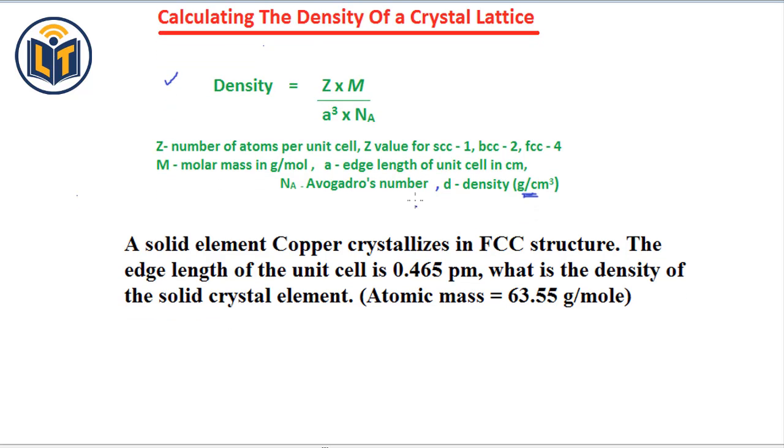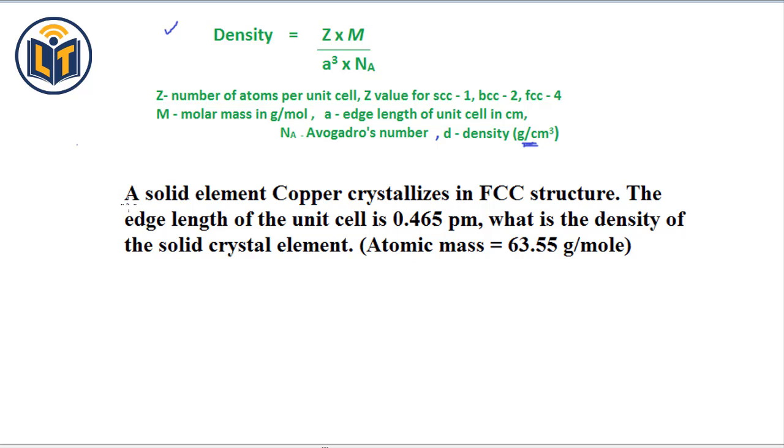This is the problem given here and I will show you how we can use this density formula to calculate the density of a crystal lattice. In this problem, it says that a solid element copper crystallizes in FCC structure. It means that Z value is given. Z value in FCC is 4. It means that there are four number of atoms in unit cell.